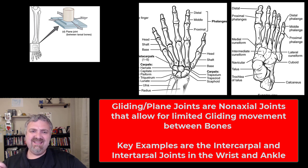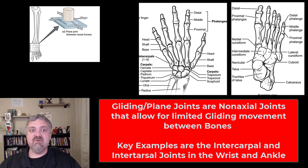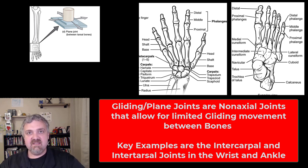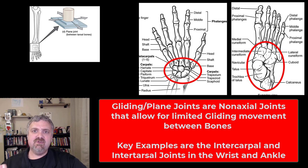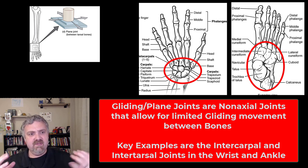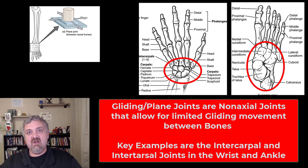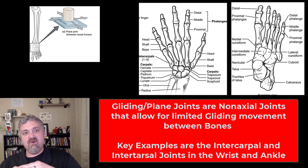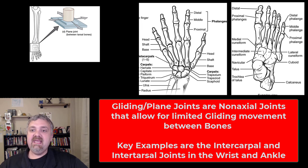Next we have plane or gliding joints. These are classified as either non-axial or multi-axial because they can move in very few directions or in all directions, depending on the joint and the ligaments holding them together. I call these gliding joints because the movement really is a gliding movement. Key examples are the intercarpal joints and the intertarsal joints — the bones of your wrist and ankle. The acromioclavicular joint, where the clavicle meets the acromion of the scapula, is also a gliding joint.